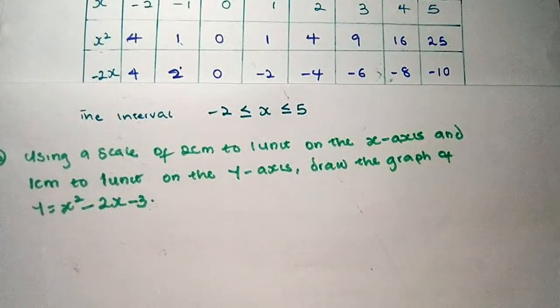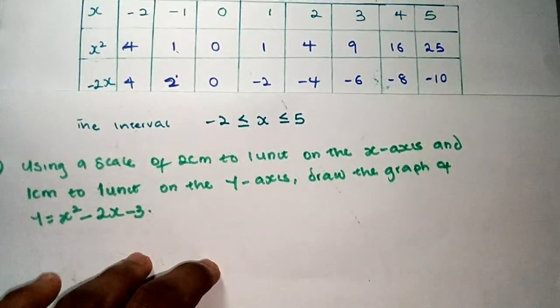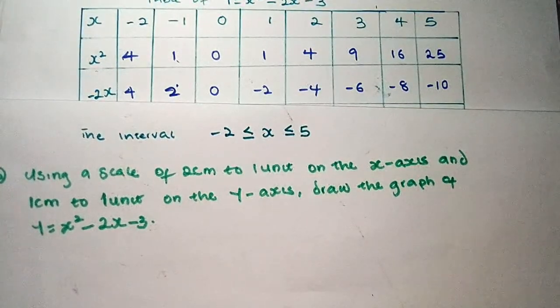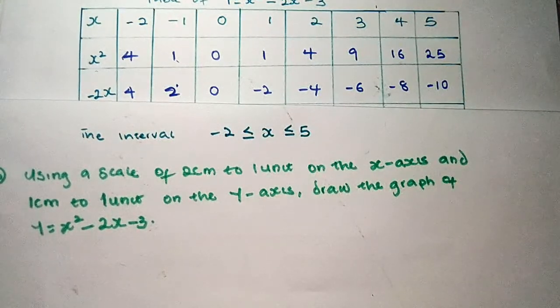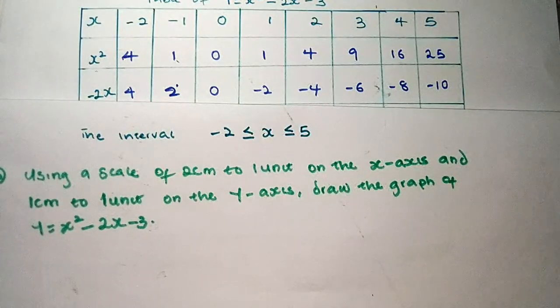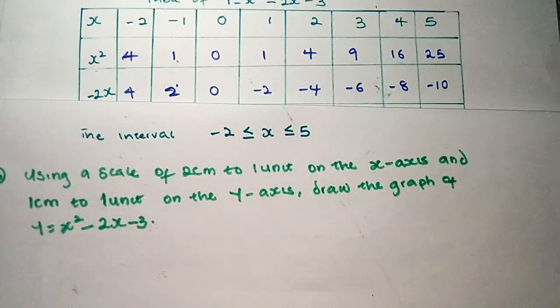Welcome back to another video. Today we're looking at something different. Last time we were talking about how to form the table of values, and we constructed the table of values for y equals x squared minus 2x minus 3. But today, in the same question, the B part says: using a scale of 2 centimeters to 1 unit on the x-axis and 1 centimeter to 1 unit on the y-axis, draw the graph of y equals x squared minus 2x minus 3.